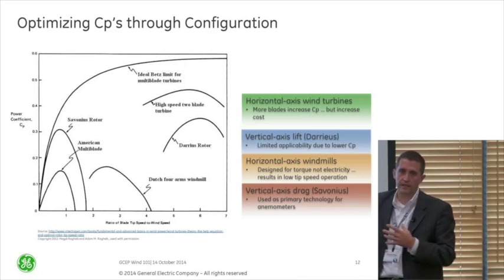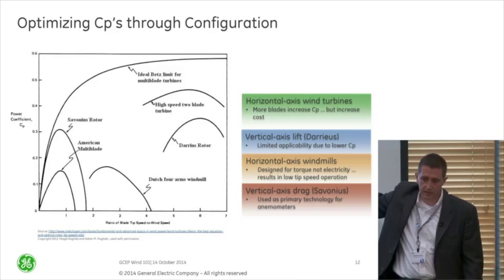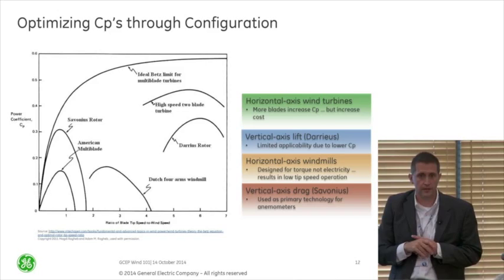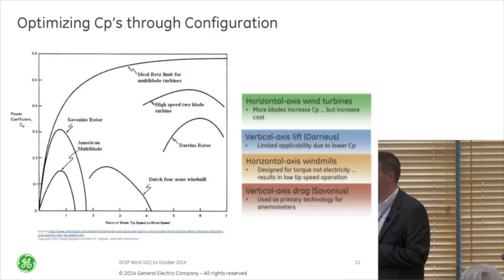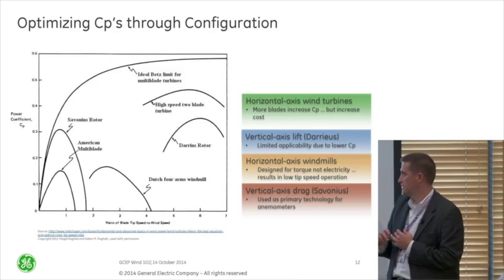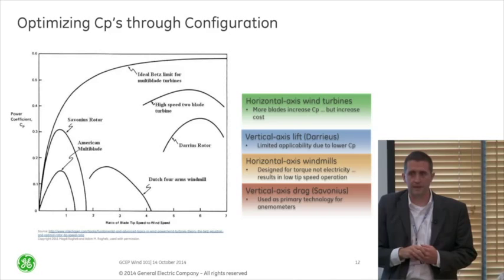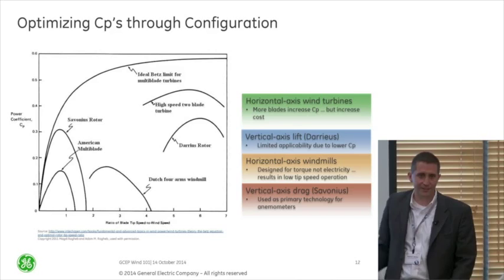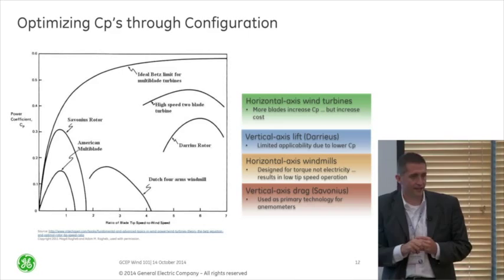The Savonius rotor has a peak CP — I think most are only around 15% — and they're typically used only for wind measurement, which they're really good at. You'll see them on top of a wind turbine if you get close enough. The multi-bladed turbines you see in the Midwest actually have very low CPs, but they're not made to produce power — they're made to produce thrust to pump water or use as some sort of mill. So that's really designed for a different case, and it's really difficult to switch utility scale wind to something other than three-bladed horizontal axis.